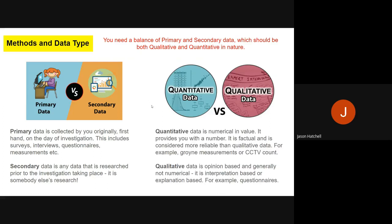Quantitative data is numerical in value—it gives you a number, it's factual, not opinion based. For example, groin measurements or CCTV counts are quantitative. Qualitative data is opinion based, generally not numerical though it can be sometimes, but mainly interpretation based—things like questionnaires. As A-level students, you need a good mix of primary and secondary and quantitative and qualitative data, which improves the reliability of your investigation overall.